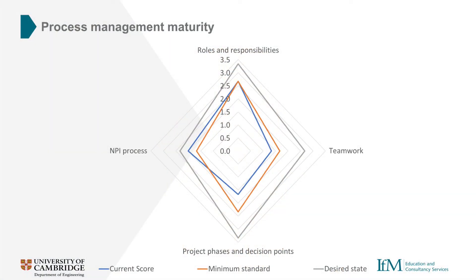Let's take a look at both our process and portfolio management maturity in detail. Turning first to process management, we can see that we have a couple of areas where current scores are below the minimum we need. We seem to have a problem with both teamwork and project phases and decision points. It's likely that there's a lack of common understanding around the nature and purpose of gated review sessions, which has no doubt been made worse by the fact that our teams are not working well together. We need to think about how we can support communication and teamwork and take actions that are going to get everyone on the same page.